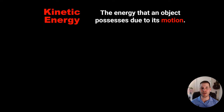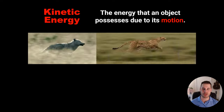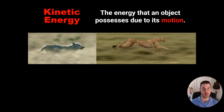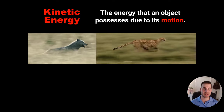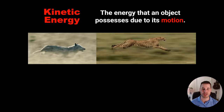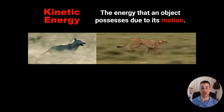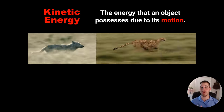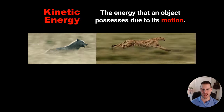We're going to start with kinetic energy first because that's the one that's easier to see with the human eye. Kinetic energy is defined as the energy that an object possesses due to its motion. Looking at two images — a cheetah and a wolf — the cheetah obviously has more kinetic energy. As you probably know, cheetahs are some of the fastest animals on the planet and are running with more motion. So more motion means more kinetic energy.